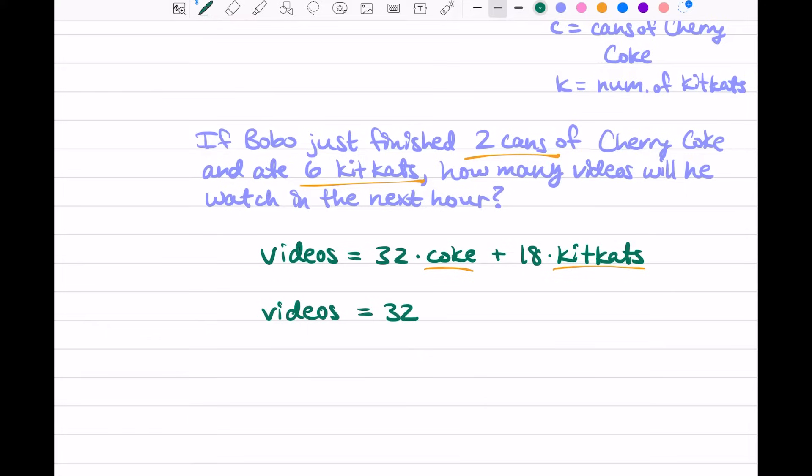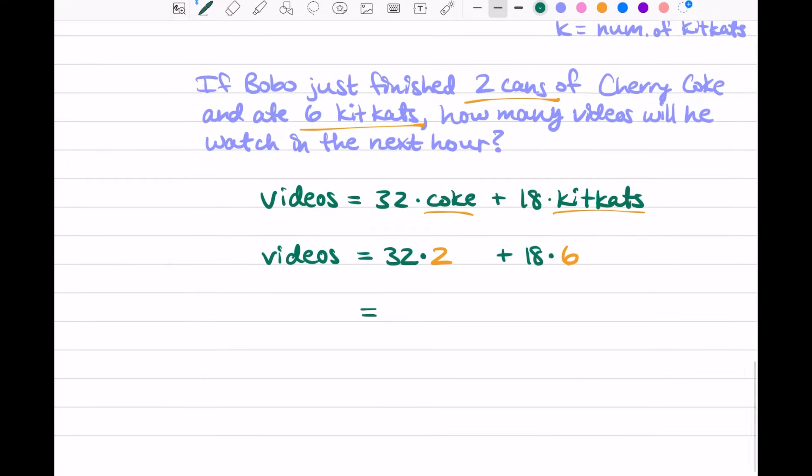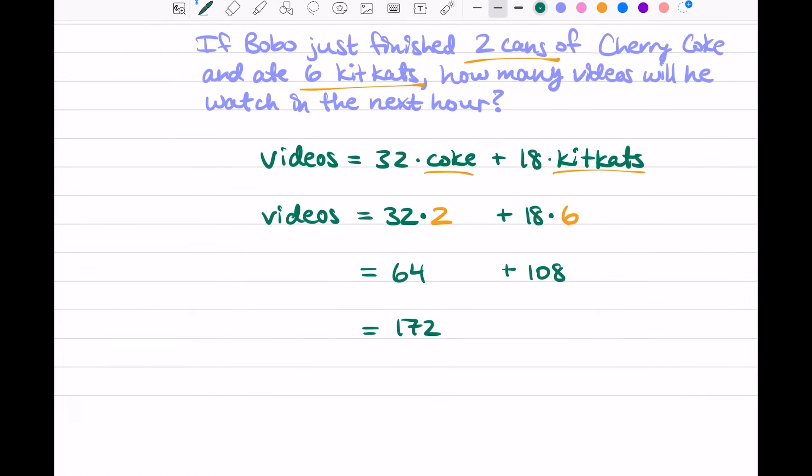So we can say videos would be 32 times 2 cans of Coke plus 18 times 6 Kit Kats. And now it's just doing arithmetic. 32 × 2 would be 64, and then you have 18 × 6, that would be 108. Add those together and you get 172. So in conclusion, Bobo will watch 172 videos in the next hour. Good job, Bobo.